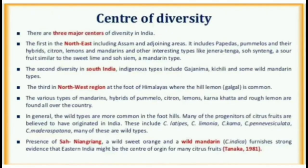Centre of Diversity: There are three major centres of diversity in India. The first is in the northeast including Assam and adjoining areas. It includes Papadis, Pumelo and their hybrids, citron, lemons and mandarins, and other interesting types like Tanga, Sowsine Teng, an sore fruit similar to sweet lime, and sowsine and mandarin types. The second is in South India where indigenous types include Gajanima, Keechili and some wild mandarin types.